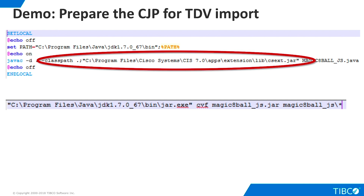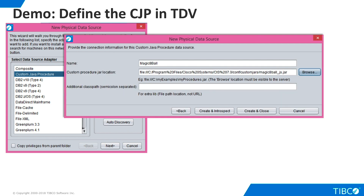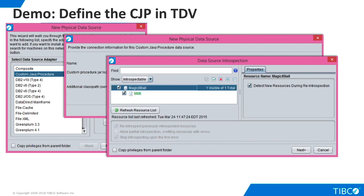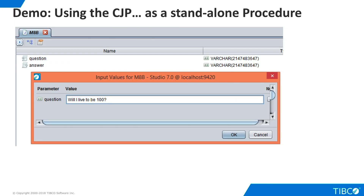Now we can define the custom Java procedure in TDV. We select New Data Source and choose Custom Java Procedure as the data source adapter. We have placed the CJP JAR in TDV's Conf Custom Jars directory. This is a convenient place to put it because it is the same location that TDV will choose if we later export the CJP as a CAR and import it into another TDV system. Now we see the M8B resource, which is the short name we used in the CJP code. We select it and introspect it. When introspection is complete, the TDV Studio namespace shows the Magic 8-Ball data source with the M8B procedure.